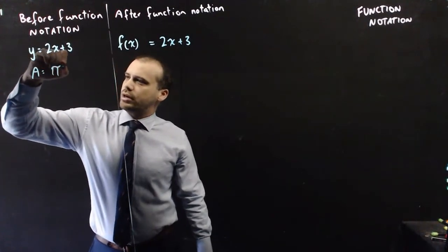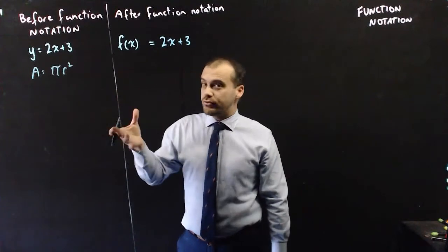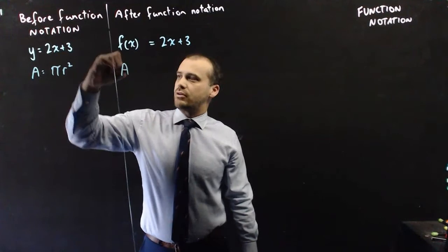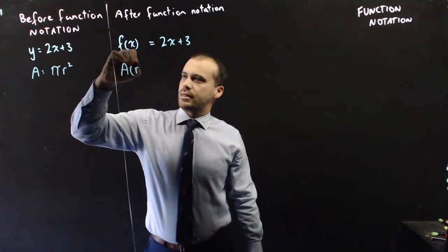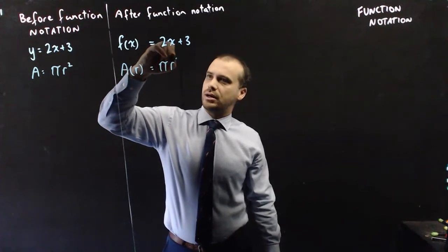Area equals pi r squared. Now that's how you'd write it before function notation, but after function notation you can say area r equals pi r squared.